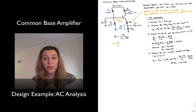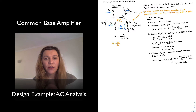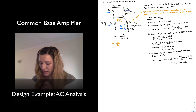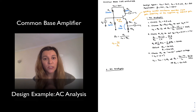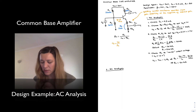We have just designed the DC bias network for the common base amplifier, and next we're going to proceed to the AC analysis. In the AC analysis we will want to determine values for small signal voltage gain, input resistance, and output resistance.